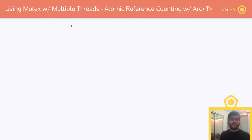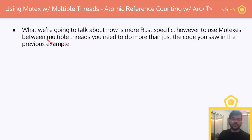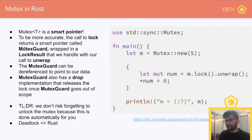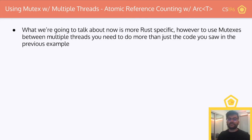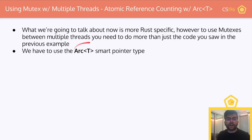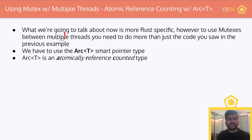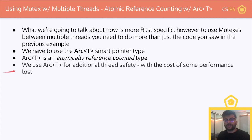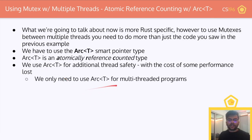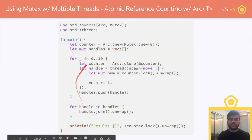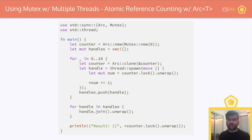Now let's say we want to use a Mutex with multiple threads. To do this in Rust specifically, you need more than just the code from the previous example. We have to use something called the Arc smart pointer type. Arc is short for Atomically Reference Counted type. We use Arc for additional thread safety, with the cost of some performance loss. We only need to use Arc for multi-threaded programs — for a singly threaded program, a Mutex alone is enough and will be super fast.